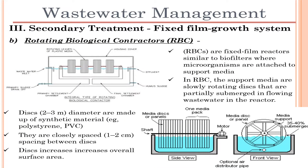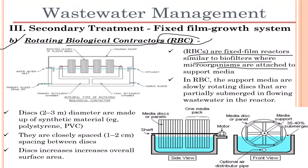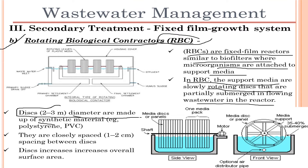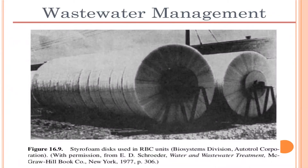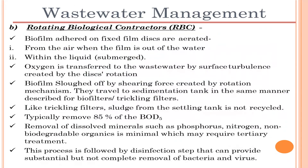The second type of system is Rotating Biological Contactors, or RBCs. RBCs are fixed film reactors similar to biofilters where microorganisms attach to support media. In RBCs, the support media are slowly rotating discs that are partially submerged in flowing wastewater in the reactor. The discs are two to three meters in diameter, made of synthetic material such as polystyrene or PVC, and are closely spaced about one to two centimeters apart. This spacing increases the overall surface area.